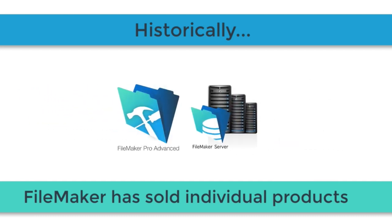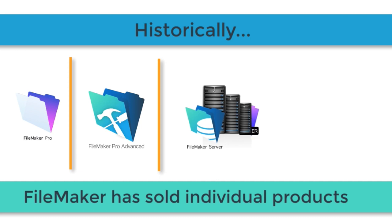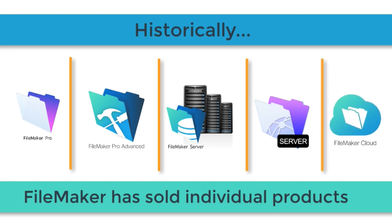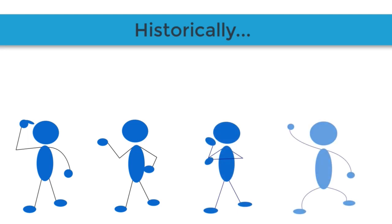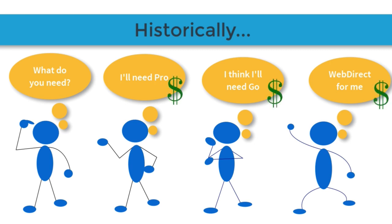For almost three decades, FileMaker has sold a copy of FileMaker Pro separately, then a copy of FileMaker Pro Advanced, which was separate from FileMaker Server, which was separate from FileMaker Server Advanced, which was separate from FileMaker Cloud. Historically, if you wanted FileMaker for your organization, you needed to list all the people connecting to the custom application, determine how they would connect — with Pro, Go, WebDirect, or other technology — and each person's needs resulted in buying different items.